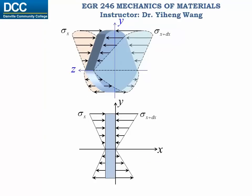The bending stress distribution is demonstrated here in both 3D view and profile view. As you can see, the bending stress distribution is different on the two sides of this segment because the internal bending moment changes with x. Now if we integrate this part of the bending stress, we get a force F_x. If we integrate the other part, we get a force with the same magnitude F_x but in the opposite direction.